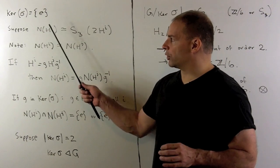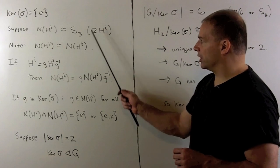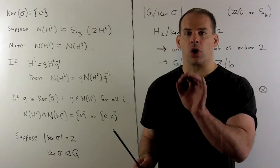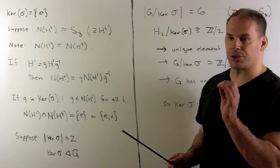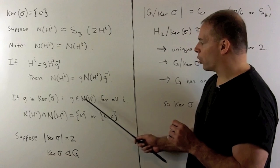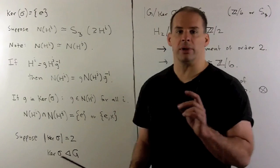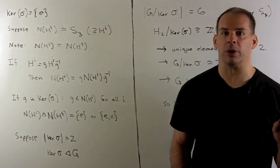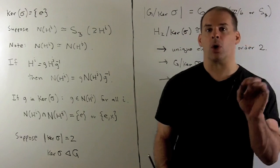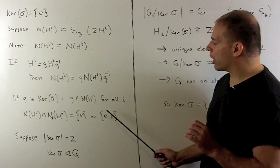For the other case, we suppose the normalizer of a Sylow 3-subgroup is an S_3. The three-element subgroup of S_3 is just the Sylow 3-subgroup. Because the Sylow 3-subgroups are all conjugate, the normalizers are all conjugate also, so each normalizer is an S_3. If g is in the kernel of sigma, g is going to be in each of the normalizers for the Sylow 3-subgroups. Taking the intersection of two of them gives a subgroup of S_3 — so it's either the identity, everything, a two-element group, or a three-element group. It can't be a three-element subgroup because H_i and H_j intersect only in the identity. Taking the intersection of all four, we either get the identity or a two-element group.